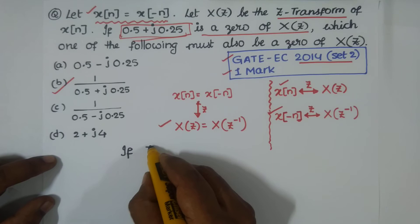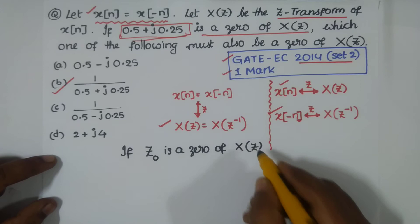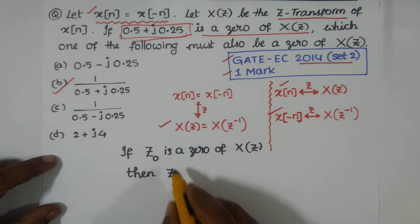If Z_0 is a zero of X(Z), then we could say 1/Z_0, or Z_0^-1, is also a zero.